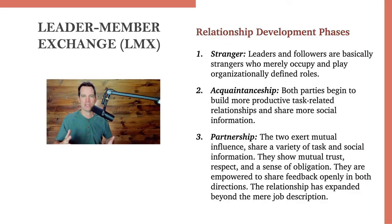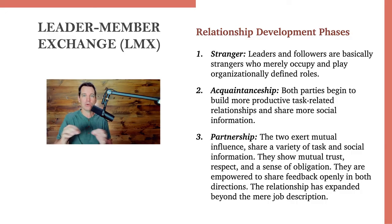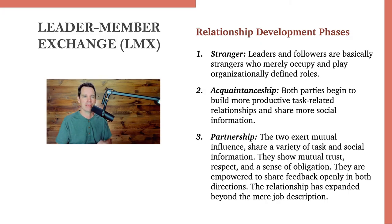Relationships have phases according to the research, and they start just like any other relationship. The first phase is stranger — when the leader and the follower meet, they're basically strangers who merely occupy whatever roles they were hired to do, with a leader-member dynamic according to their job descriptions. The next phase over time is acquaintanceship, just like you develop in your own personal life, where both parties begin more productive task relationships and also share more social information — maybe a little small talk about their lives outside of work.